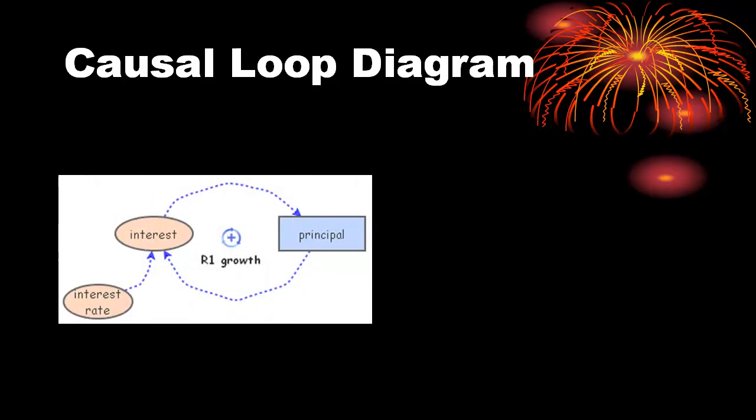This causal loop diagram indicates that principle and interest interact to create interest, which adds to principle, which then figures into the creation of additional interest in the next cycle. The plus circle at the center indicates that this is a reinforcing or growth loop.